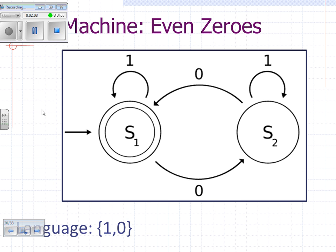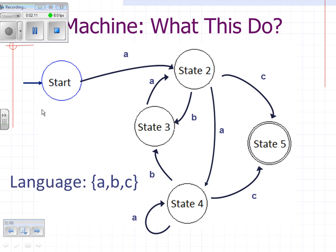Let's look at another one, slightly more complicated. This might be used to evaluate some sort of code. The start state, you can see, has a blue line around it. But the end state is over here at state 5.